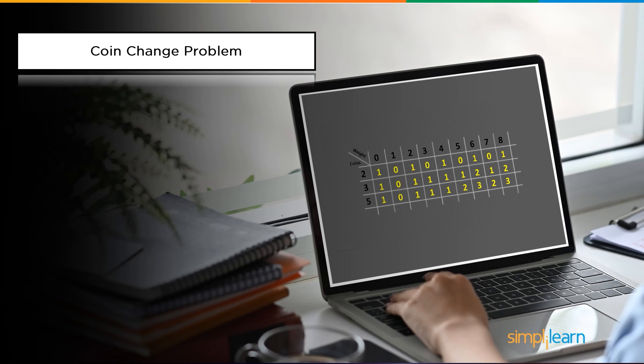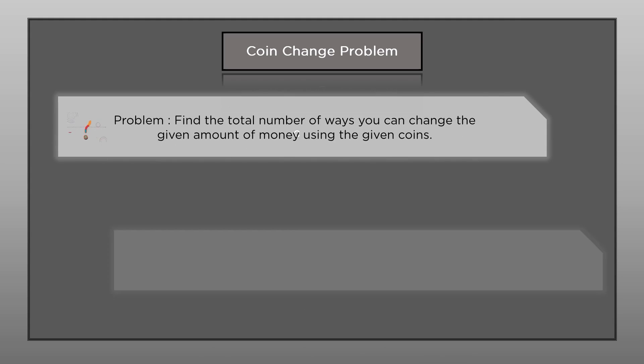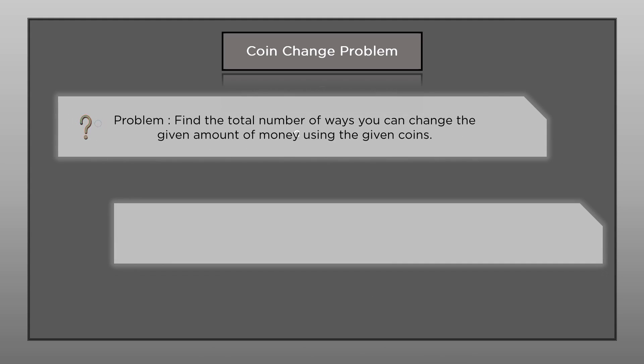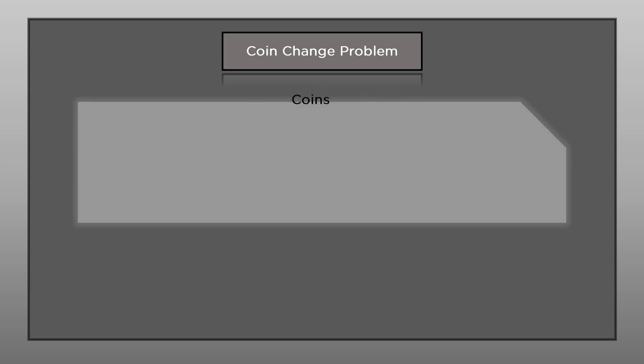The coin change problem is defined as the total number of ways you can change a given amount of money using coins. We are provided with different types of coins of varying denominations and a specific amount, referred to as W. Let's look into an example.